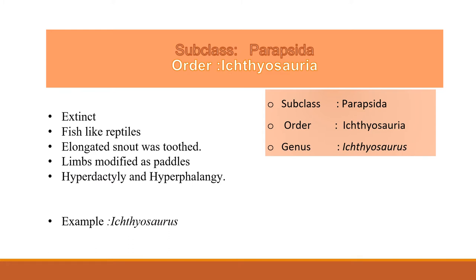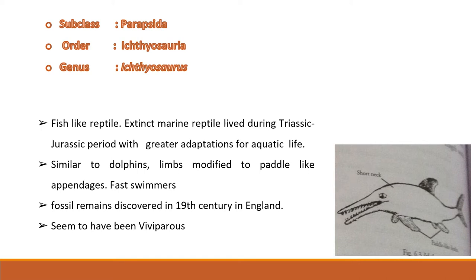Ichthyosauria, coming under subclass Parapsida, were fish-like reptiles. They had an elongated snout which was toothed. Limbs were modified as paddles and they showed hyperdactyly and hyperphalangy. Ichthyosauria is an extinct marine reptile commonly known as fish lizard, had a streamlined body that was fish-like or dolphin-like. The gills were absent while the respiratory organs were lungs. It was an active swimmer and females gave birth to young ones.